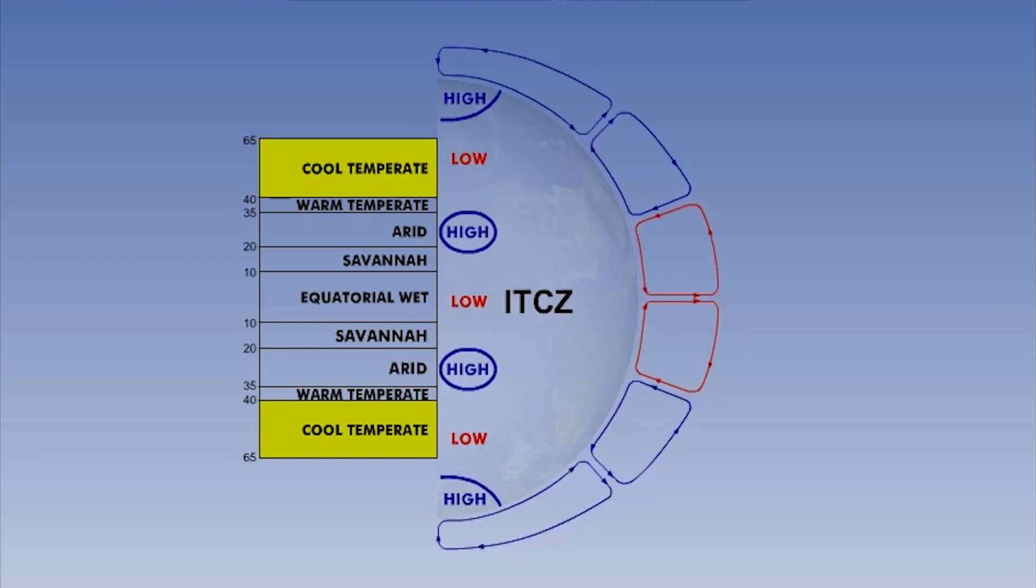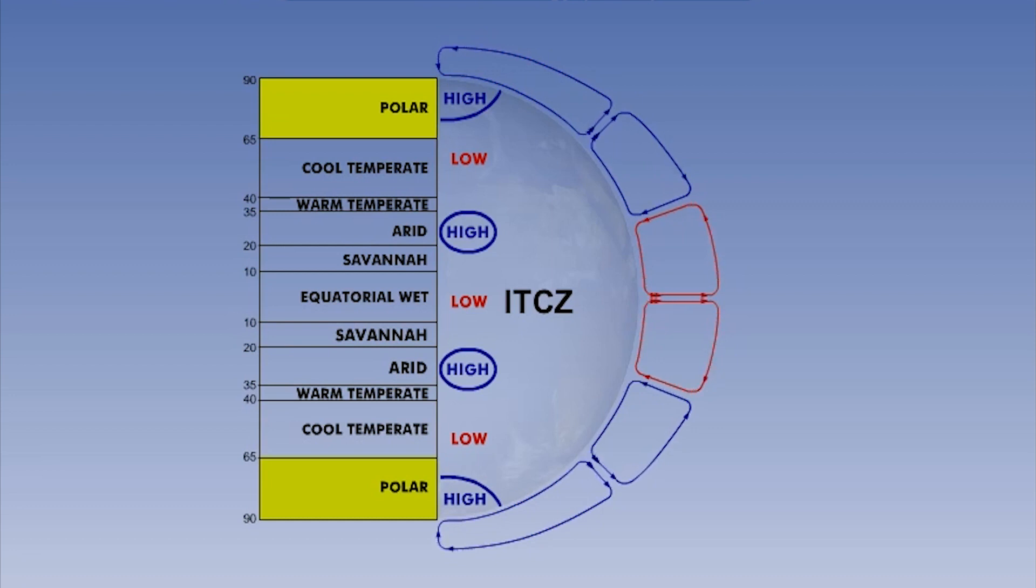The last major zone on this model is the polar zone and extends from 65 degrees to 90 degrees latitude. This zone is sometimes referred to as a cold desert. Typically, the air is very dry, but extremely cold. Remember, though, that the polar front depressions are very mobile and do penetrate this zone on occasion, giving very unsettled weather.